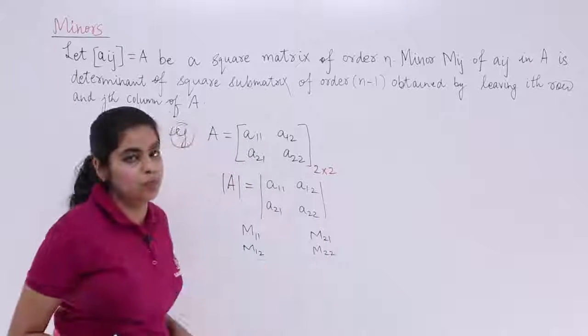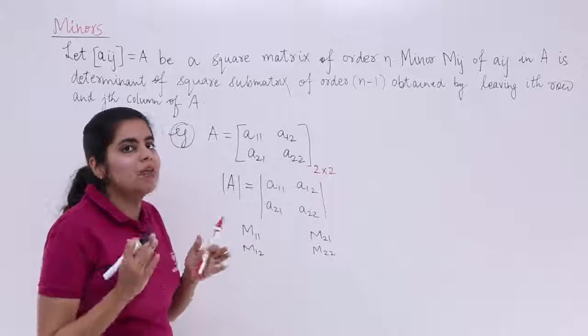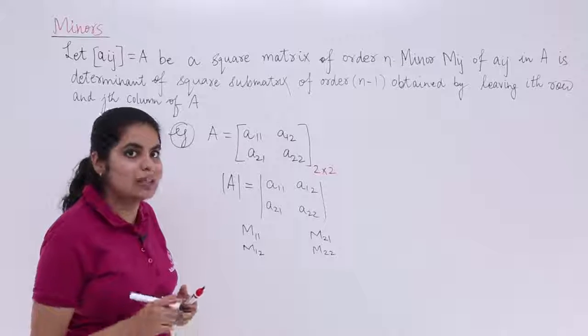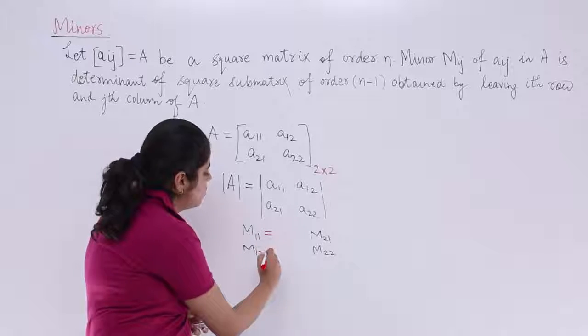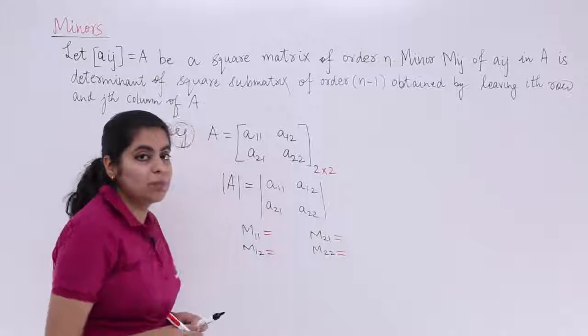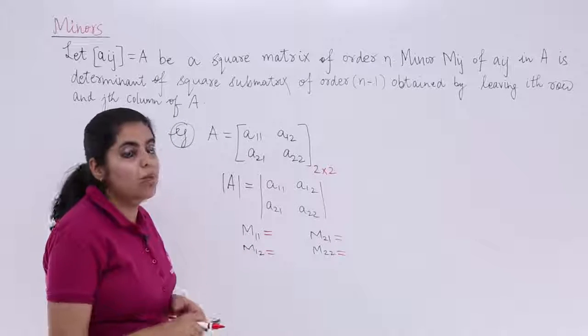First of all, this thing we should know. Now what is the value of a minor and how to compute it? Let's see that. I write equal to for all these four minors and let's go about computing it.